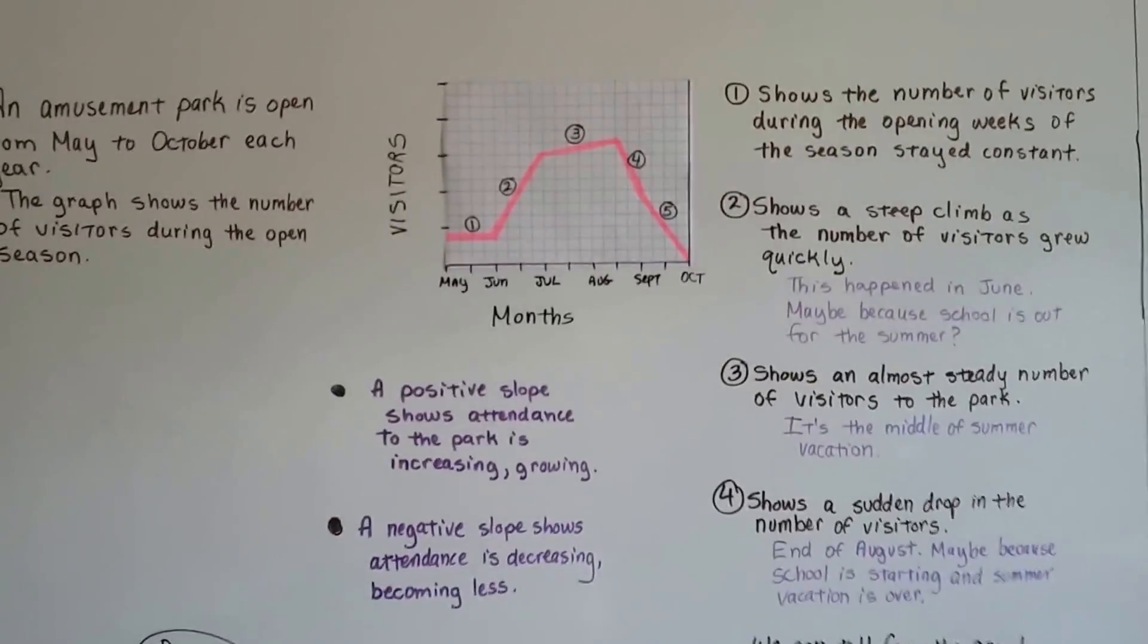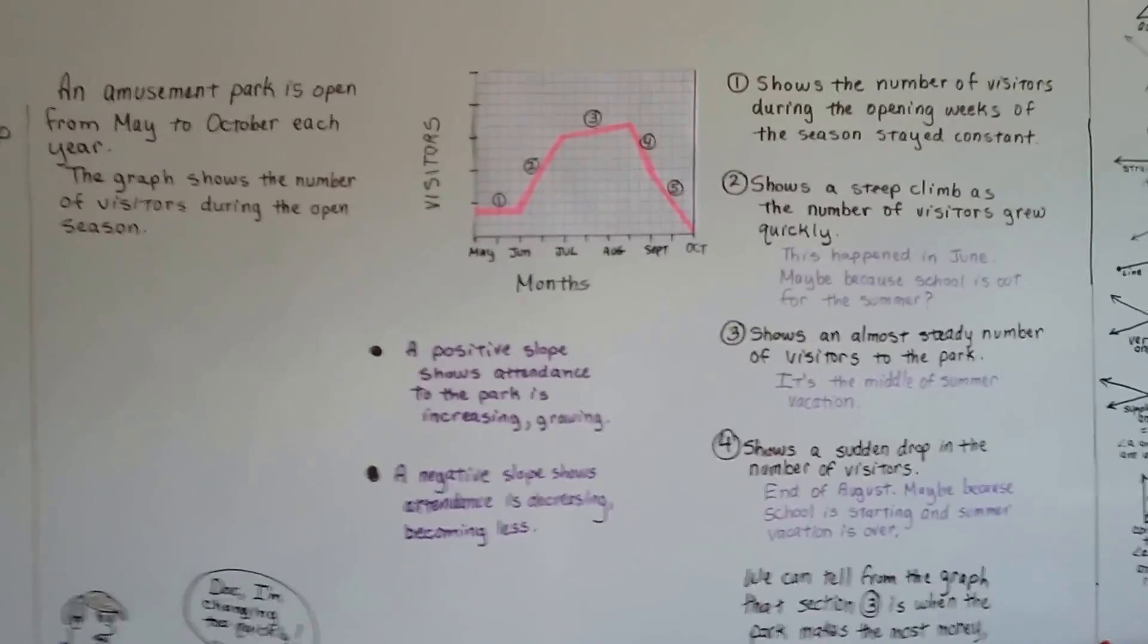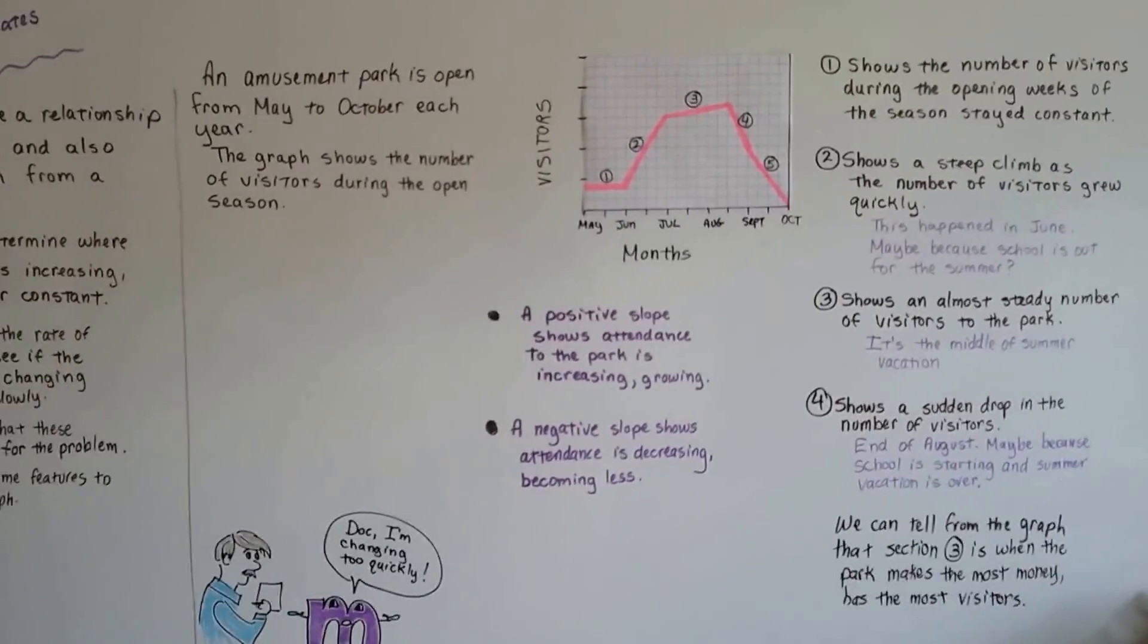Interpreting graphs. We can see the rates of change. If we wanted to, we could plot those points and we could actually find the slope and we could find the rate of change, couldn't we?